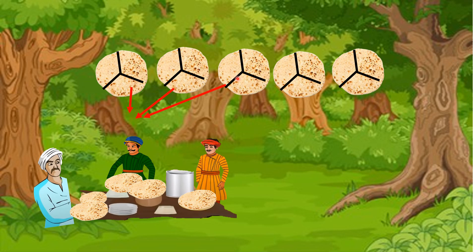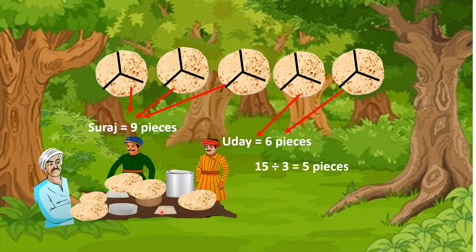Suraj was having three chapatis, and each chapati was made into three pieces — three threes are nine pieces. Uday was having two rotis; in each roti three pieces, two threes are six pieces. Together that's nine plus six, fifteen pieces total. Divided by three, each person got five pieces. So Suraj took five, Uday took five, and Sham also took five pieces.